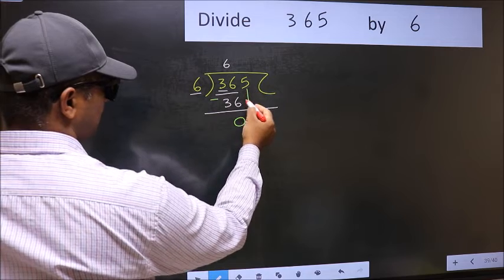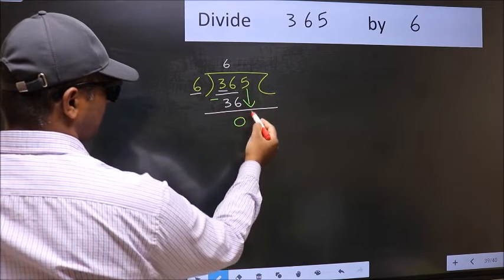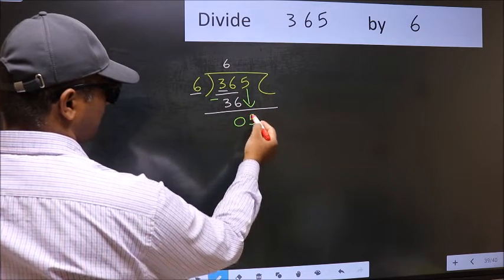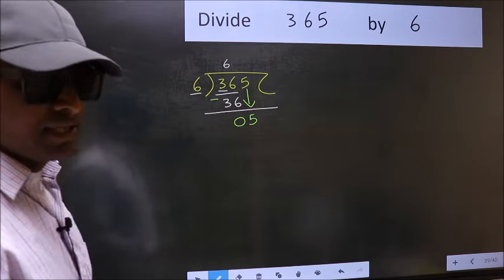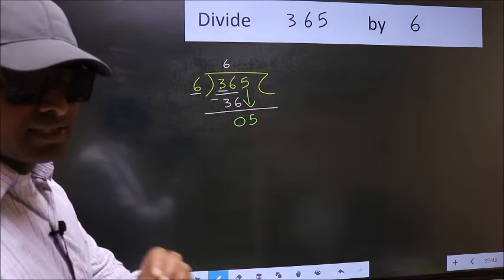After this, bring down the beside number. So 5 down. After this step, the mistake happens. And the mistake is this.